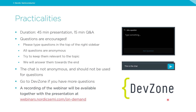The duration of this webinar will be approximately 60 minutes — 45 minutes for a presentation and then roughly 15 minutes for Q&A. Questions are encouraged; please type them in the Ask a Question box at the top of the right sidebar. All questions are anonymous, so try to keep them relevant to the topic, and we will answer them towards the end in the Q&A session.